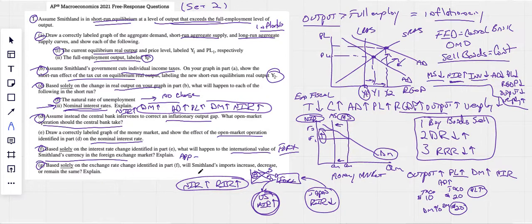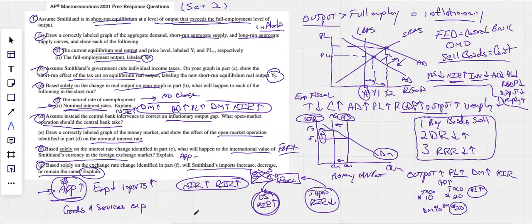Based solely on the exchange rate change identified, will Smithland's imports increase, decrease, and remain the same? We should just know this off the top of our head. There's no reason at this point in the game not to recognize that when a currency appreciates, when the dollar appreciates, I know exports go down, which also imply that imports go up. This is a clear sort of understanding of doing a lot of work on the 4X. If the currency is more valuable, it implies that foreigners have to spend more of their currency to buy our currency, which makes our goods and services more expensive.